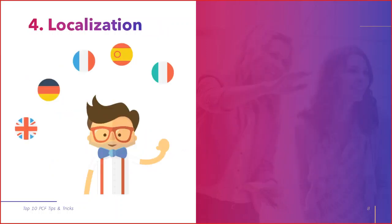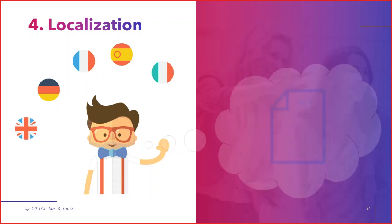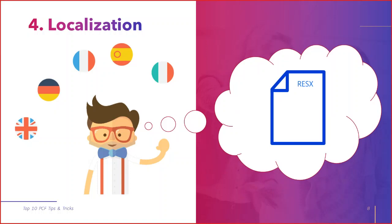And now, localization. Some people around the world want to use applications in their own language. There is a possibility in the framework to make localization for them. There are files called ResX files used for translations, and with those ResX files there are also language code IDs. You need to have a ResX file and a corresponding language code ID - so LCID. With that combination, you will target the language with your translation file. For example, English is 1033 and Italian is 1040.